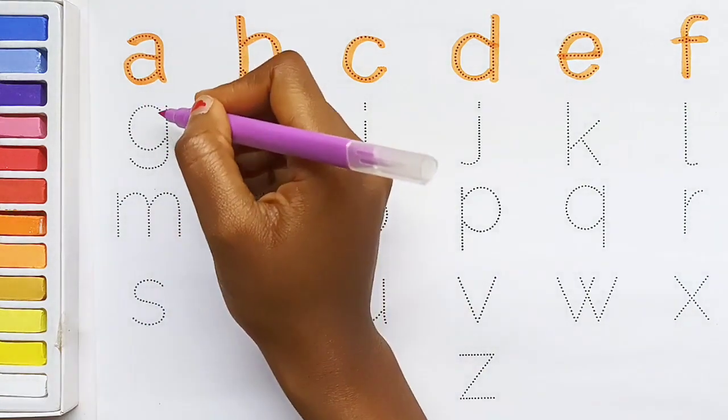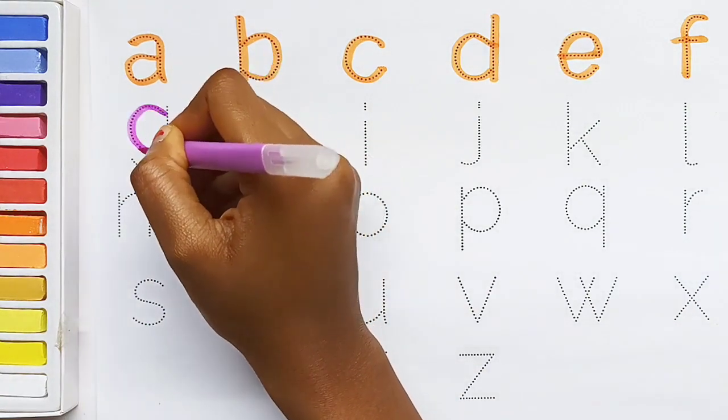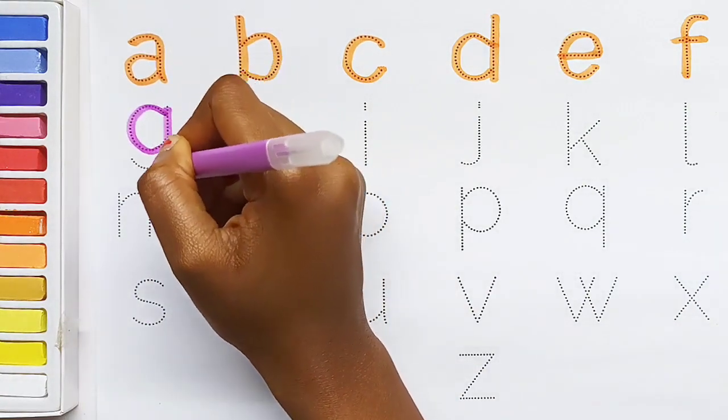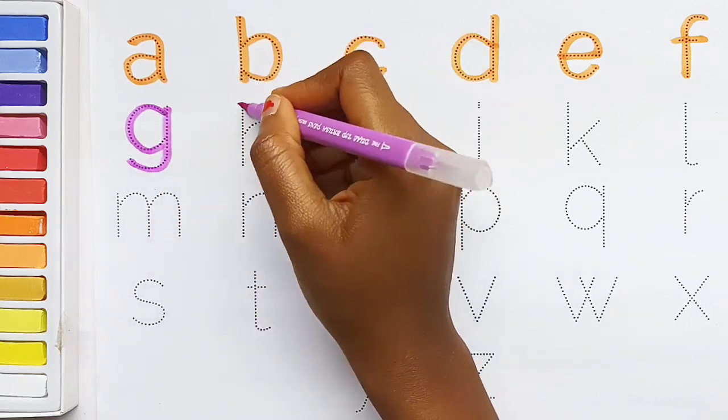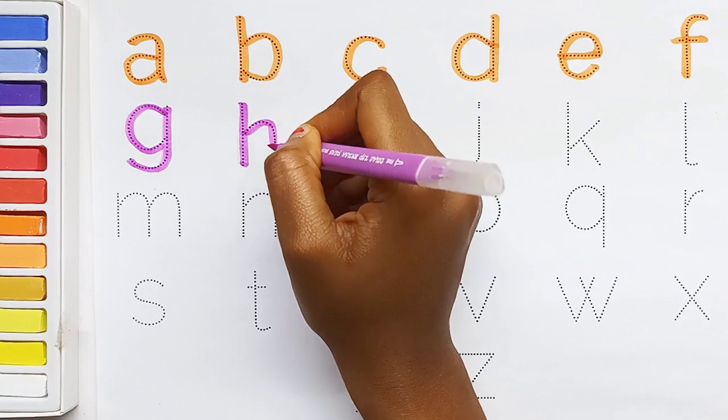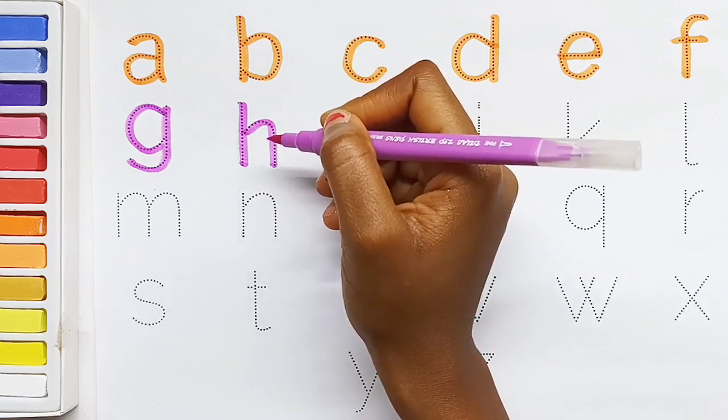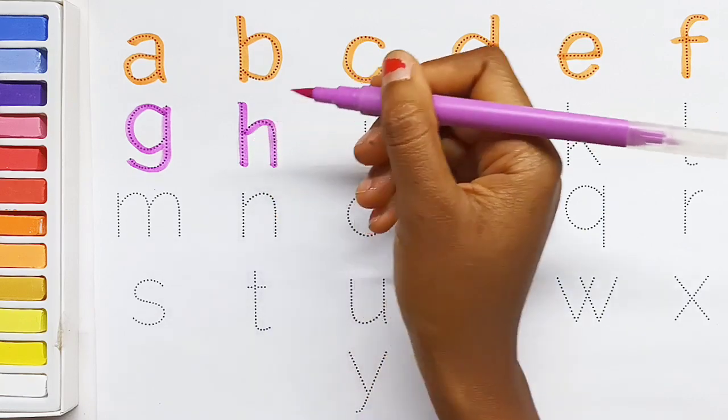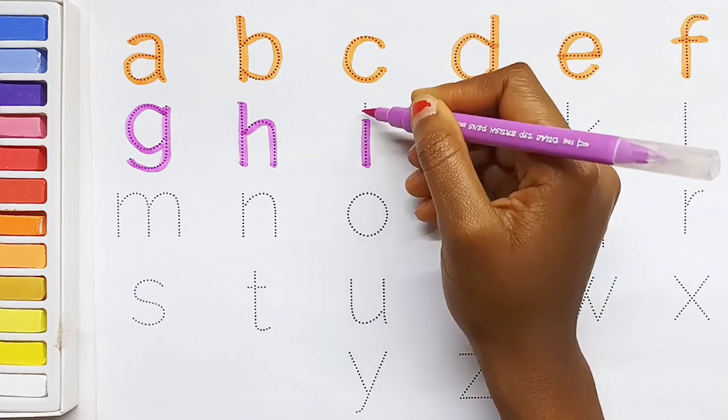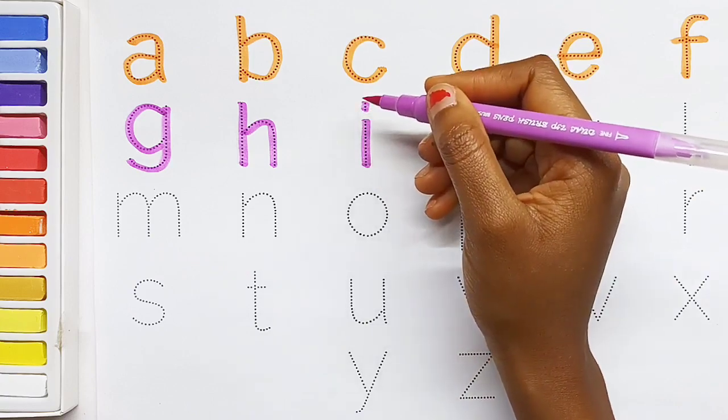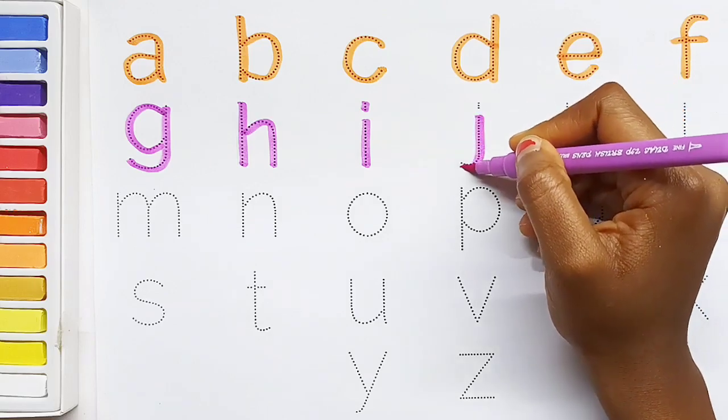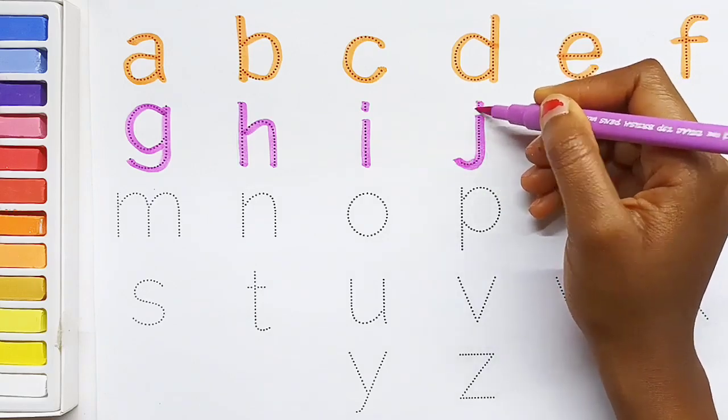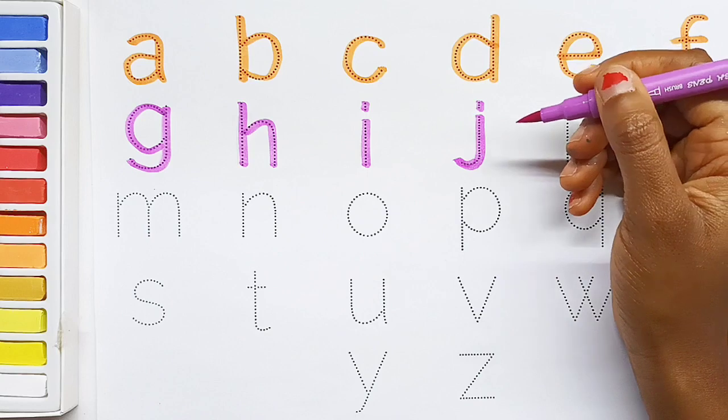G for girl, H for house, I for ink, J for jog.